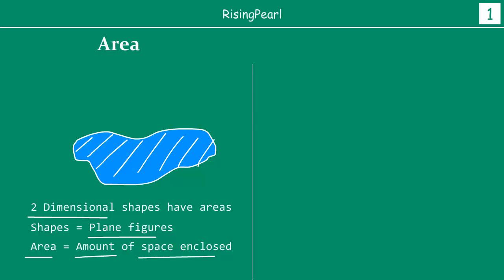In the last webisode we looked at when we refer to area. We have an irregular shape drawn on a piece of paper. Area is for two dimensional shapes — two dimensional shapes have areas. These shapes are also referred to as plane figures because we can draw them on a piece of paper, which is two dimensional. When we say area, we refer to the amount of space which is enclosed within the shape or the figure, as highlighted in blue and also these stripes.